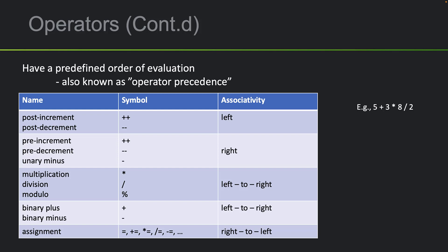We can apply this same system to C since operators have an order of evaluation. There's a precedence table where the further up you go in the cells, the higher the precedence — meaning they get evaluated earlier. Operators in the same cell have equal precedence, so their evaluation order is determined by the order they appear in the expression.